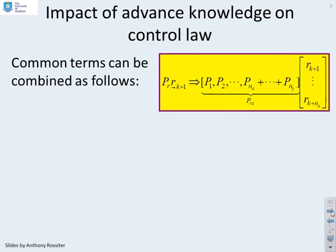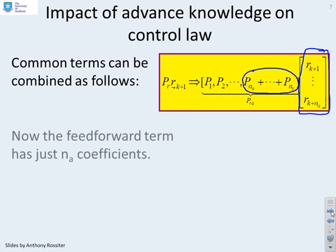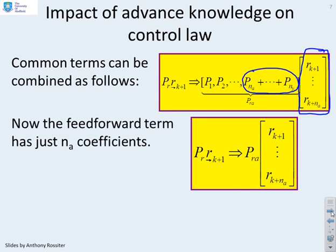You'll see what I've done is I've simply combined the terms that all multiply the same r value, and I've shortened this r future vector so it now only goes from rk plus 1 up to rk plus na. And the last term is multiplied by pna, pna plus 1, all the way up to pny. I've given this new vector a slightly different name. I've called it pra rather than pr, so the a to tell you that I've restricted the advance knowledge. This is the subtle change that we're going to make to the GPC algorithm, and you'll see it is relatively simple.